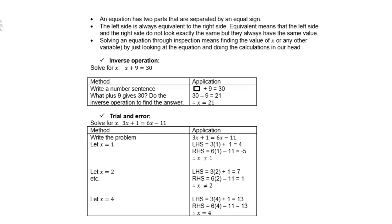An equation has two parts that are separated by an equal sign. The left side is always equivalent to the right side. Equivalent means that the left side and the right side do not look exactly the same, but they always have the same value. Solving an equation through inspection means finding the value of x or any other variable by just looking at the equation and doing the calculations in our head.